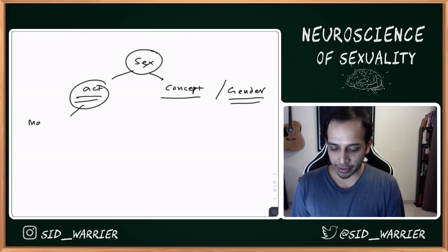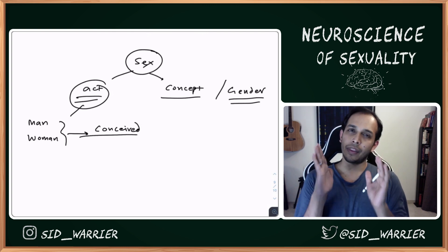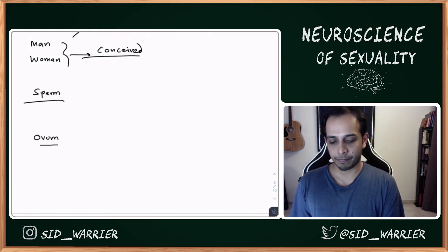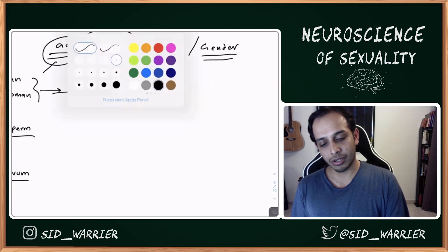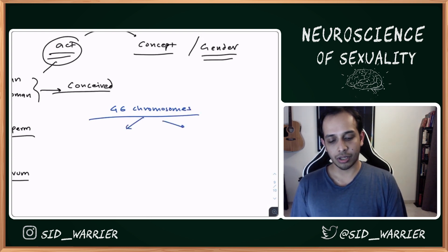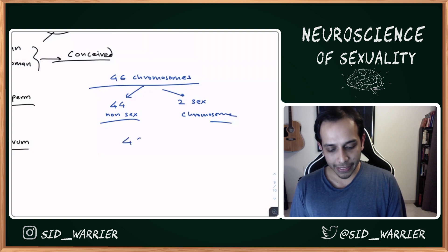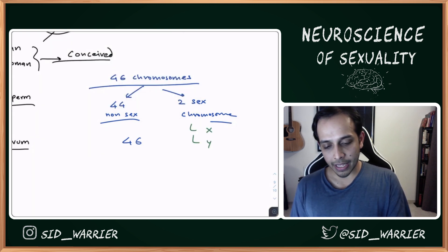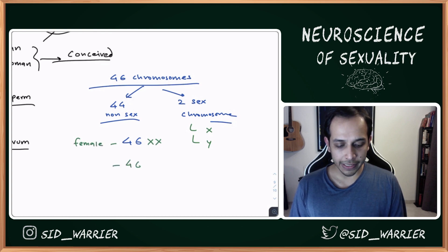Let's assume that the act of sex was between a man and a woman and they conceived. The man released a sperm and the woman released an ovum. Now we need to talk about chromosomes. In human beings you have 46 chromosomes, out of which 44 are non-sex chromosomes and 2 are sex chromosomes — written as 46XX, which makes a female, or 46XY, which makes a male.